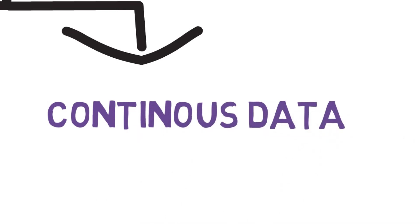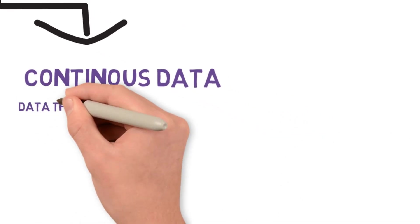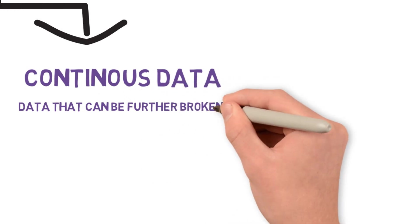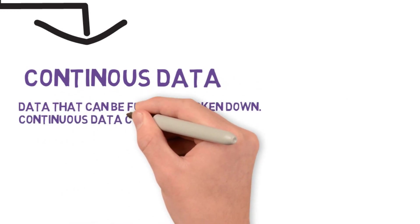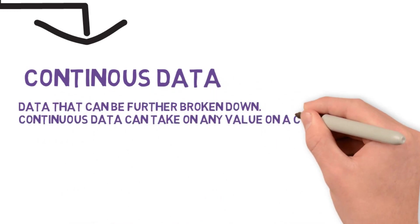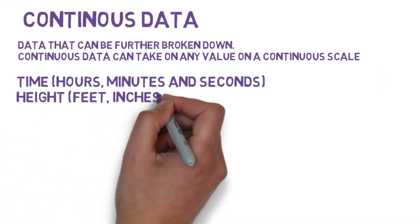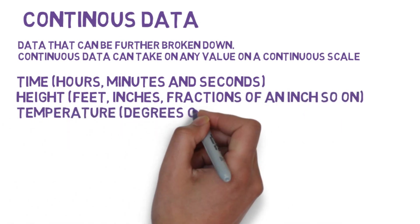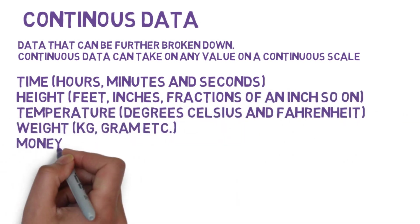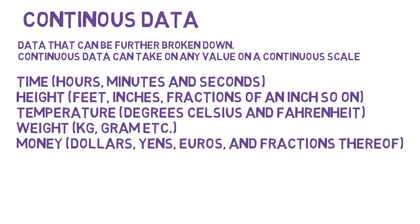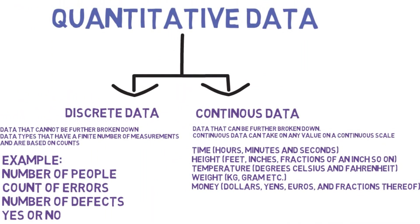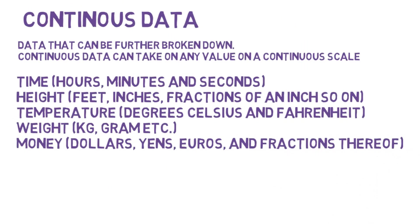The second type is continuous data. This is data that can be further broken down. Continuous data can take on any value on a continuous scale. For example, time. Time can be in hours, minutes, and seconds, and it goes to infinite numbers. Height: feet, inches, fractions of an inch, and so on.